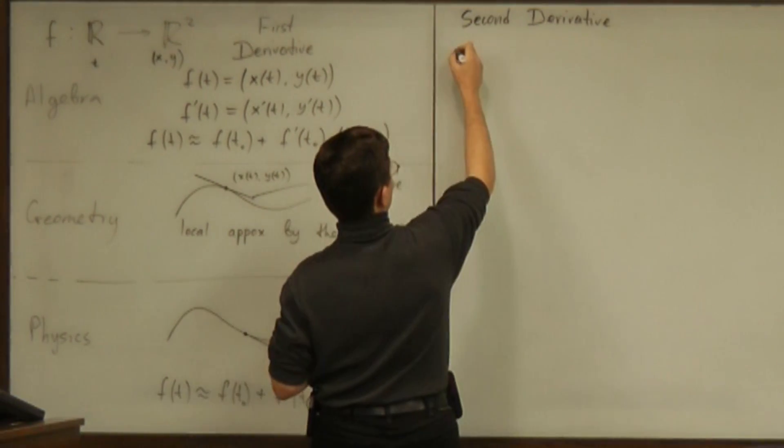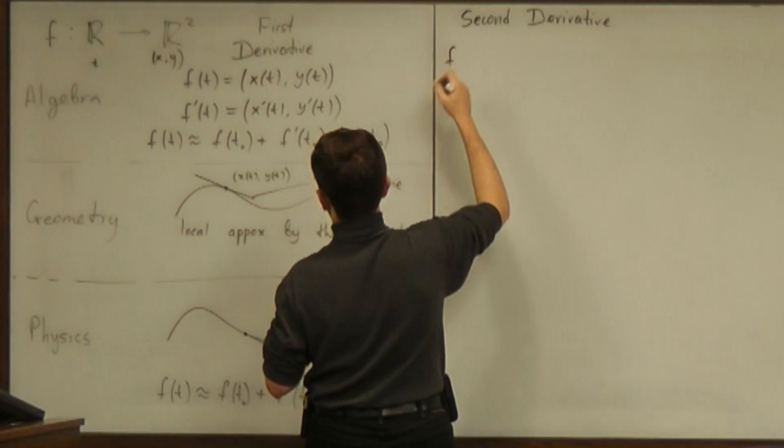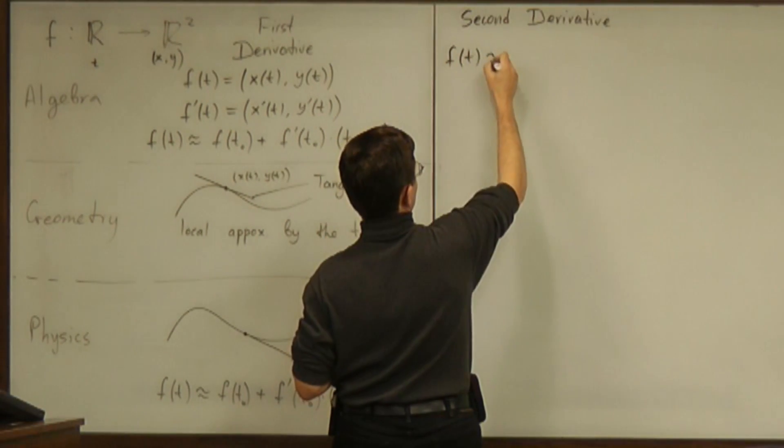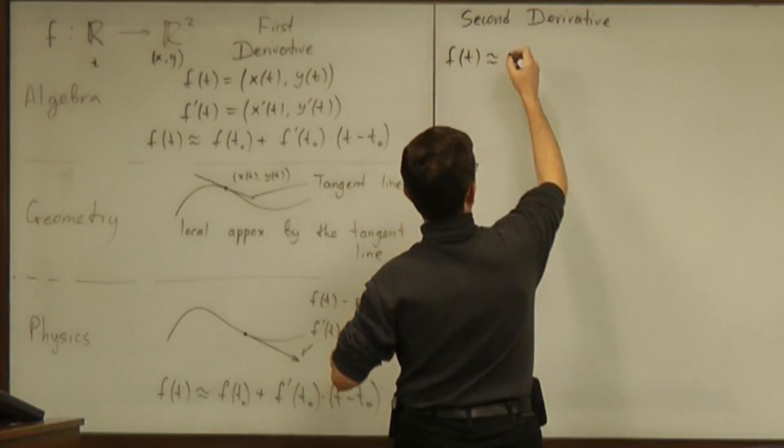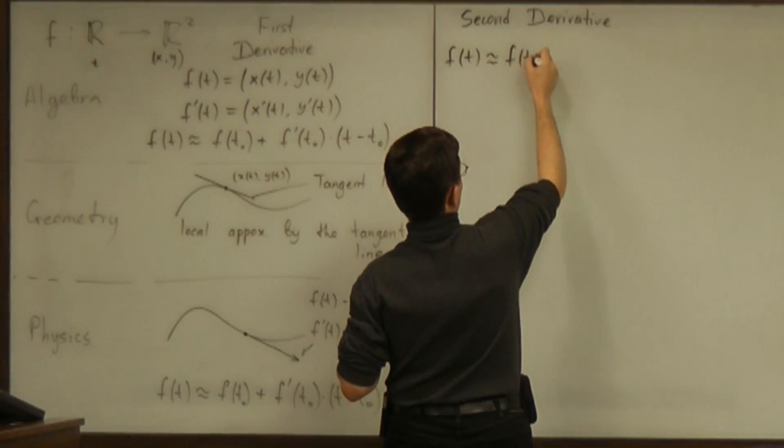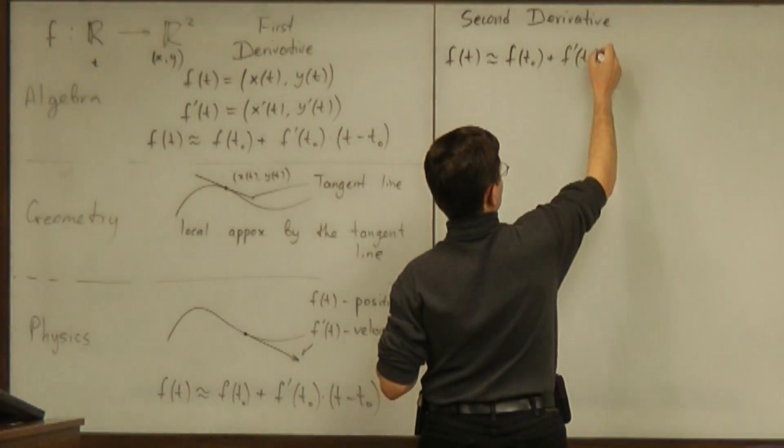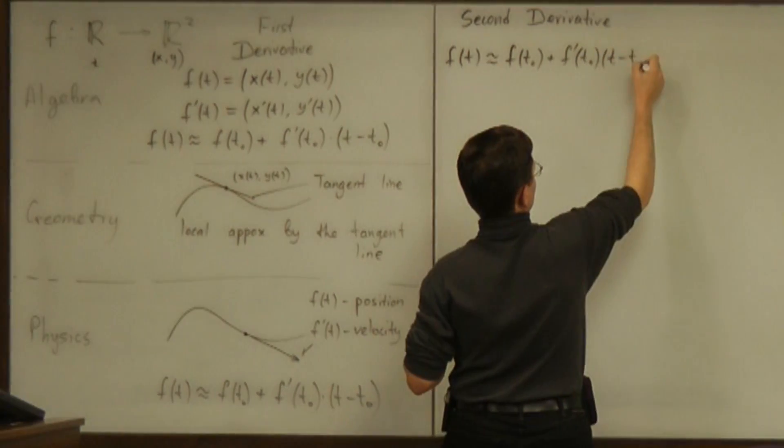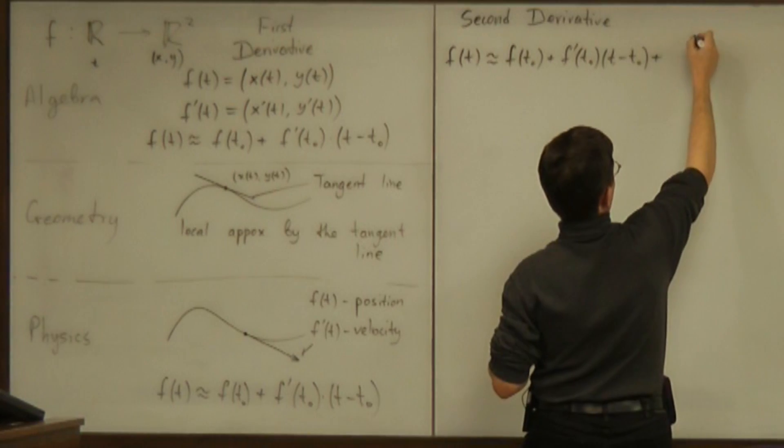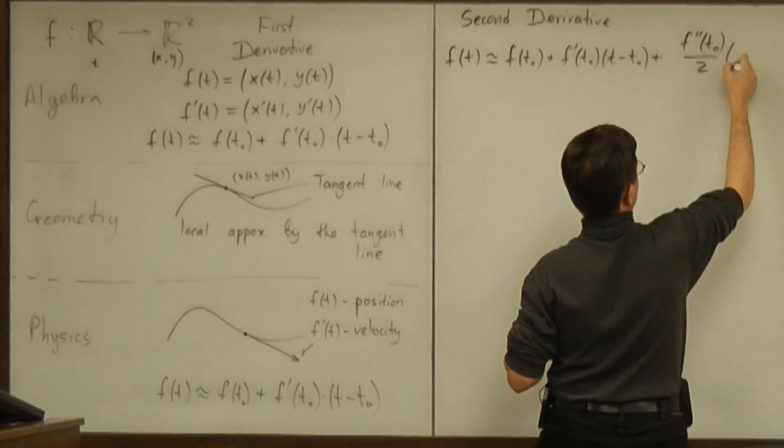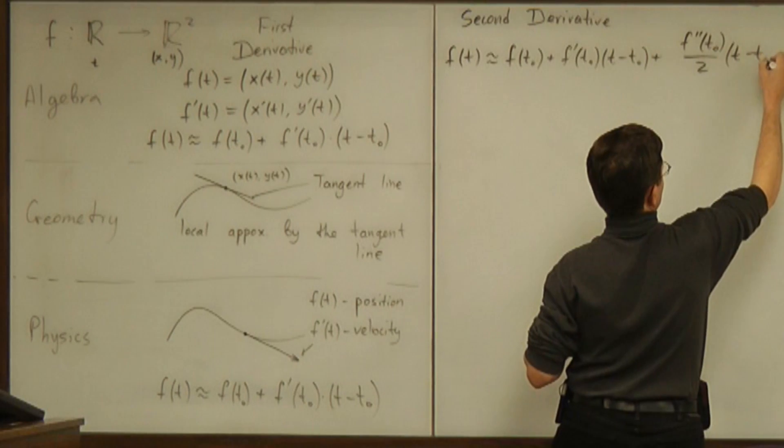Algebraically, the second derivative appears in this second degree Taylor approximation of the function: f of t0 plus f prime of t0 times t minus t0 plus f double prime of t0 over 2 times t minus t0 squared.